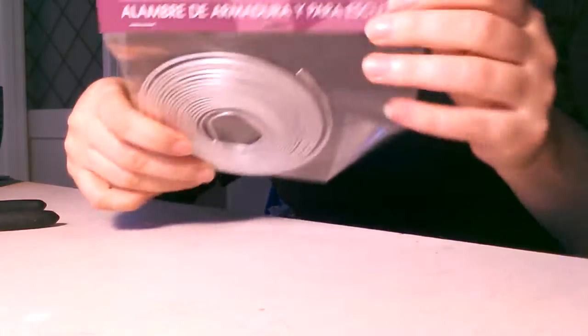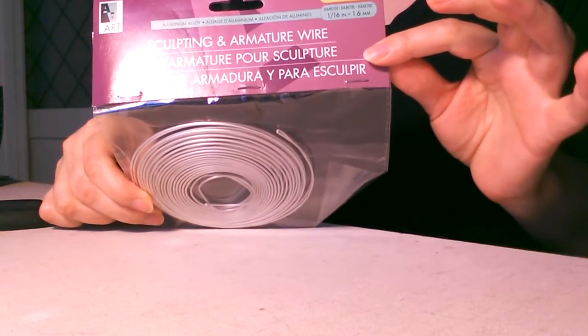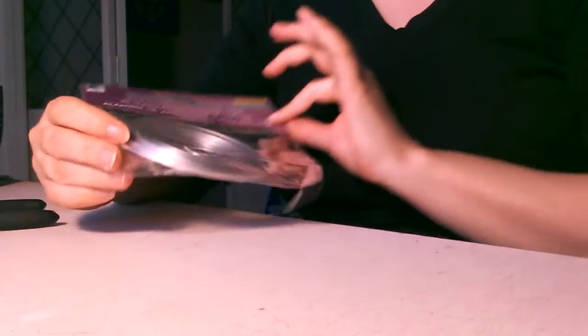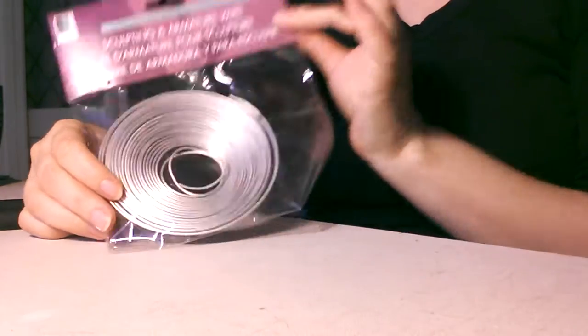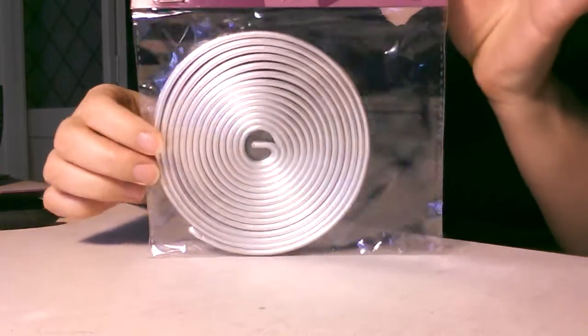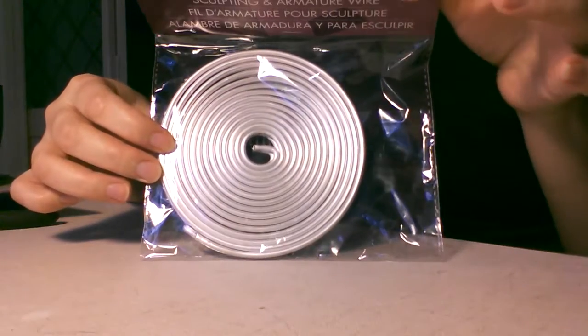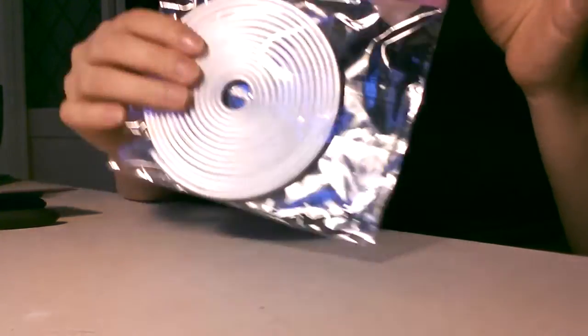You'll also need wire. If you happen to be in Savannah at Ex Libris, this is the wire that they sell. It is aluminum wire, it calls itself sculpting an armature wire. This is the medium gauge. They also sell a heavier gauge. These two gauges will be pretty much what you need for this project.